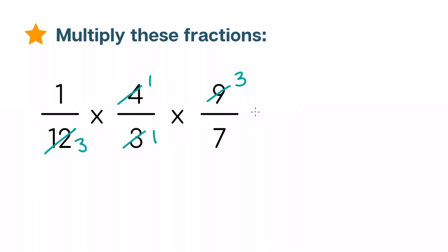Now, this looks a lot easier, so let's multiply our 3 fractions. Multiplying our numerators, we'll get 1 times 1 times 3, which equals 3. And for the denominators, 3 times 1 times 7 is 21.